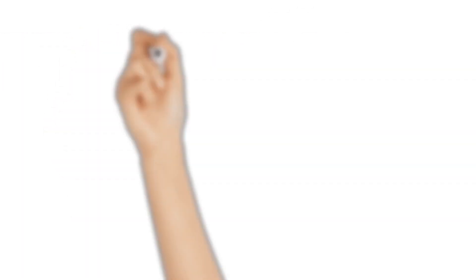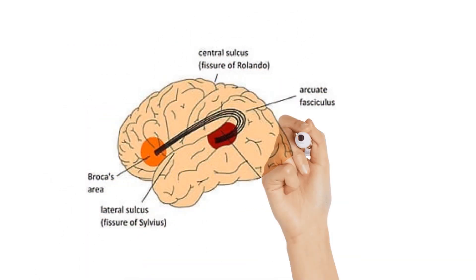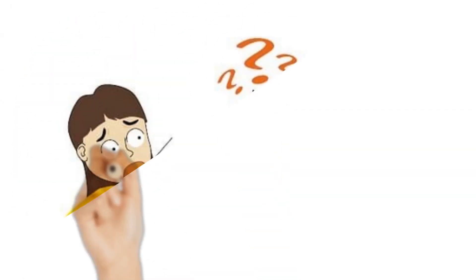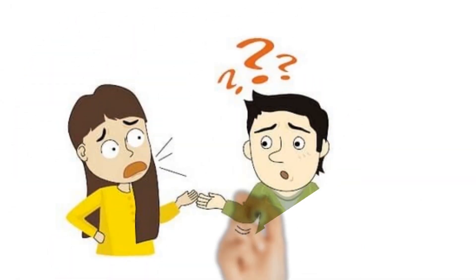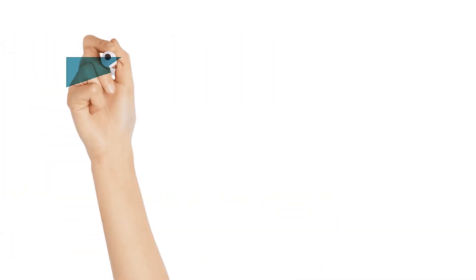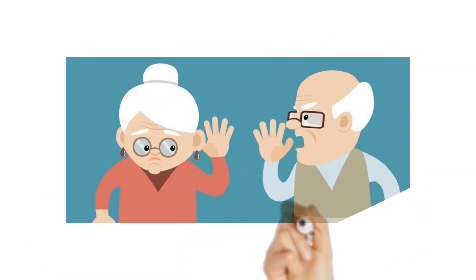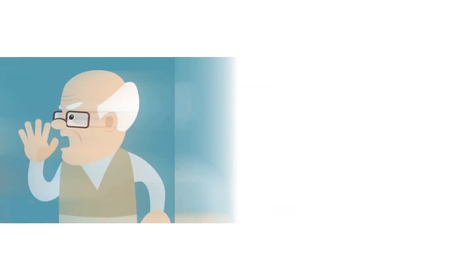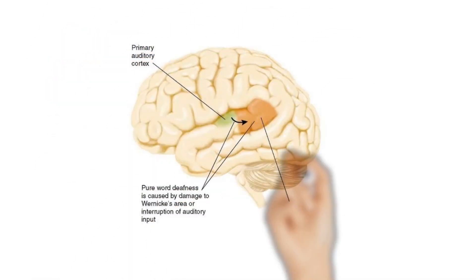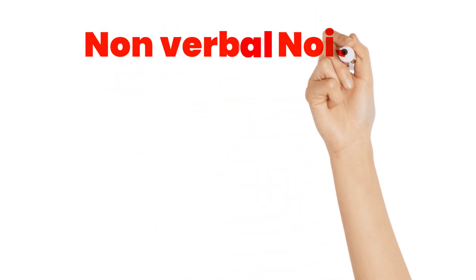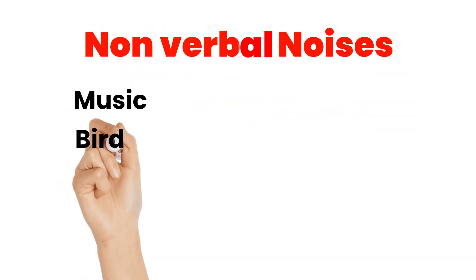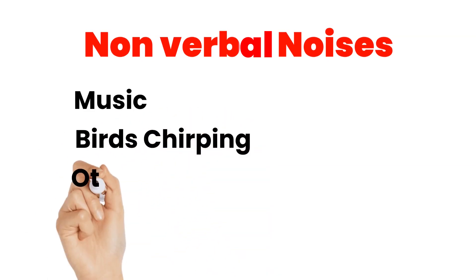Let's see about word deafness, also called auditory agnosia. Auditory agnosia is caused by a lesion in area 22, located in the superior temporal lobe. In auditory agnosia, the person is able to hear what another person is speaking but cannot comprehend what they are trying to say. However, the person is able to comprehend other forms of non-verbal noises such as music, birds chirping, or vehicle noises.